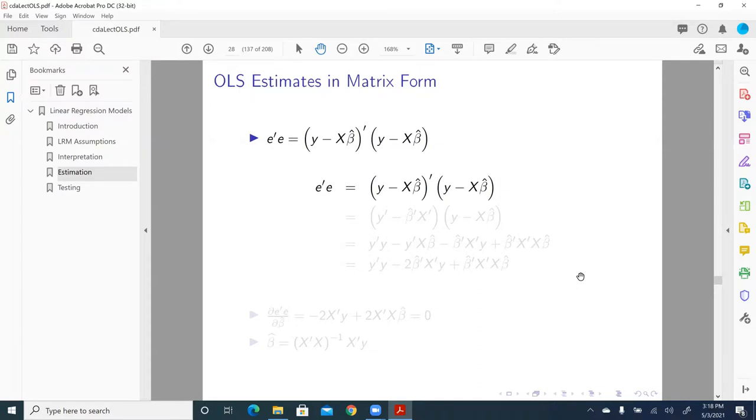In matrix form, the sum of square errors can be expressed as E prime E. Prime denotes a transpose, and what is E? E is equal to Y minus X beta hat. Beta is unknown yet. Prime, that is transposed, multiplied by Y minus X beta hat. We can go through this calculation using matrix algebra. E prime E, that is the sum of square errors, is equal to Y prime Y minus 2 beta hat prime X prime Y plus beta hat prime X prime X beta hat.